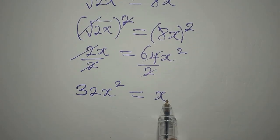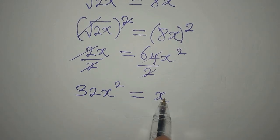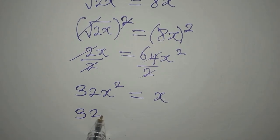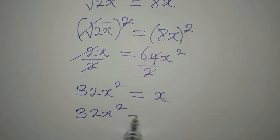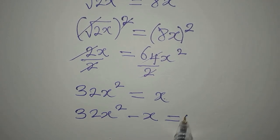Now, bring this to the left. Do not divide by x, bring this to the left, so we have 32x squared minus x equals 0.